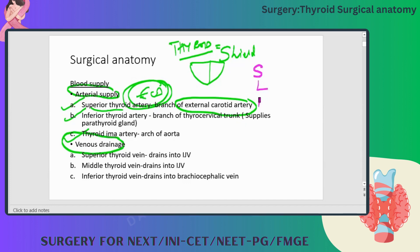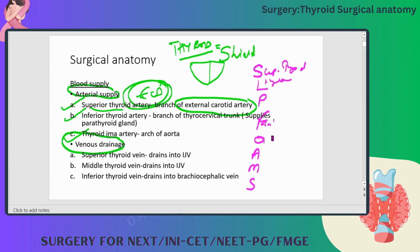So in the mnemonic 'Sisters Louie powdered face often attracted medical students': S is superior thyroid, L is lingual, second L is facial — I'll just recollect and tell you. For the time being, superior thyroid artery is a branch of external carotid artery. Inferior thyroid artery is a branch of the thyrocervical trunk. Thyroid ima is a direct branch of the aorta.